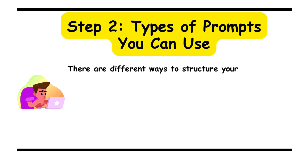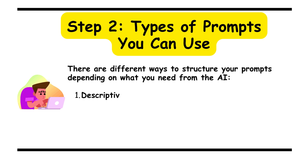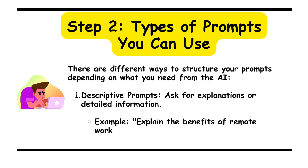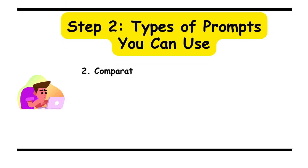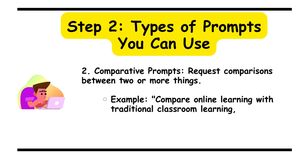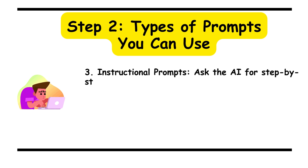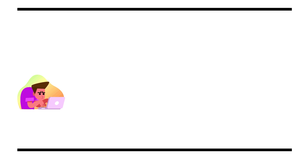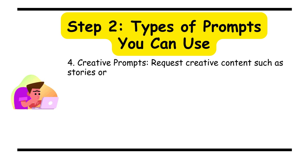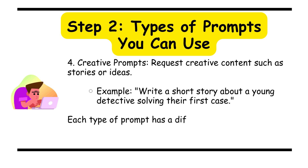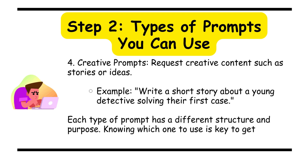Step 2: types of prompts you can use. There are different ways to structure your prompts depending on what you need from the AI. First, descriptive prompts: ask for explanations or detailed information. Example — 'Explain the benefits of remote work for productivity.' Second, comparative prompts: request comparisons between two or more things. Example — 'Compare online learning with traditional classroom learning, focusing on flexibility and cost.' Third, instructional prompts: ask the AI for step-by-step guidance. Example — 'Give me a step-by-step guide on how to start a blog using WordPress.' Fourth, creative prompts: request creative content such as stories or ideas. Example — 'Write a short story about a young detective solving their first case.' Each type of prompt has a different structure and purpose — knowing which one to use is key to getting relevant results.